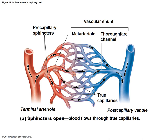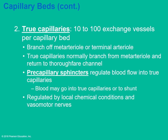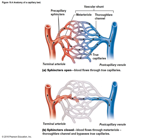There are anywhere from 10 to 100 true capillaries per capillary bed. The pre-capillary sphincters regulate the flow of blood through the true capillaries. When they are open, blood flows through the entire capillary bed. When closed, it's like a roadblock — blood flows only through the vascular shunt. Whether open or closed, blood then flows on the other end of the capillary bed into the venule.